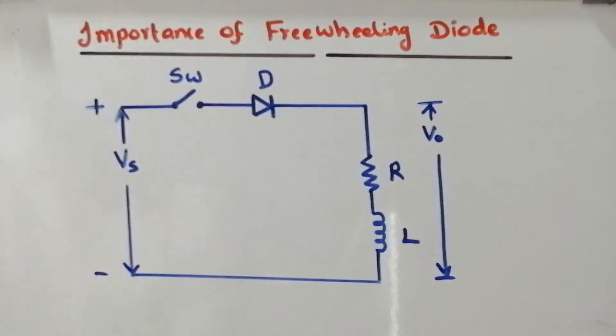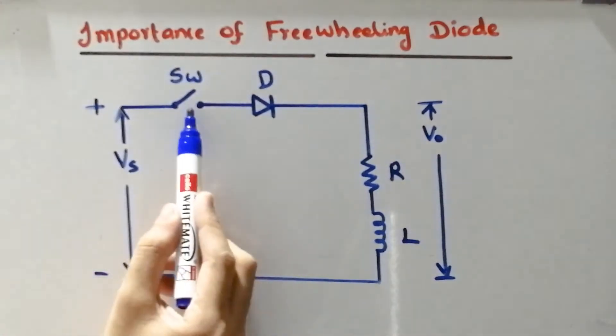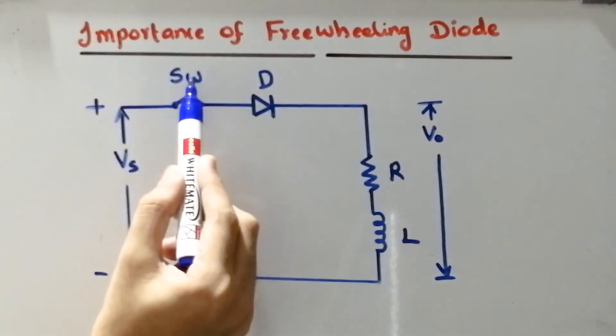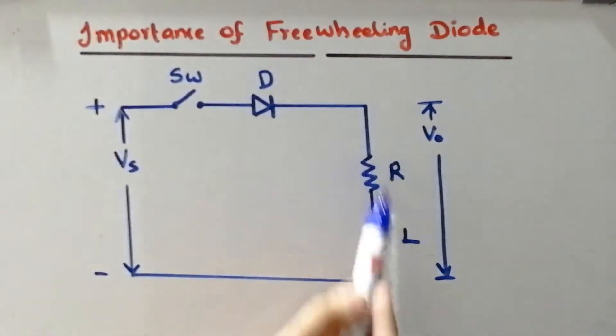Now let's consider a circuit diagram. Here we have the supply Vs and we are having a power switch represented by SW, and we are having a power diode and RL load.